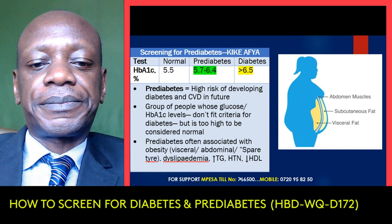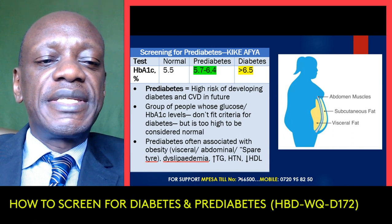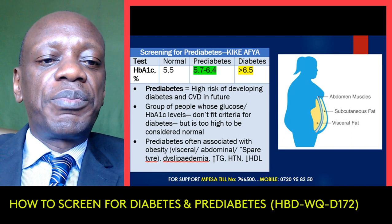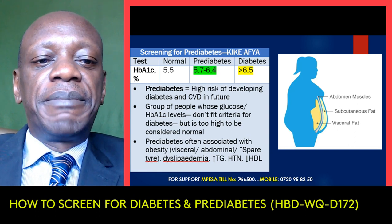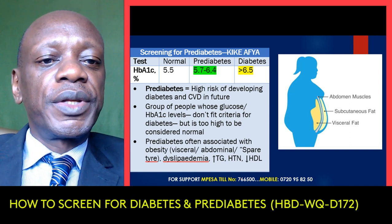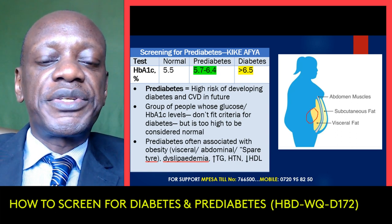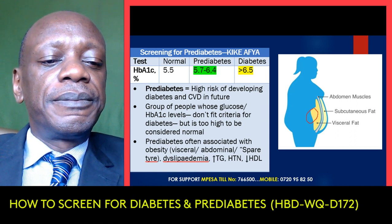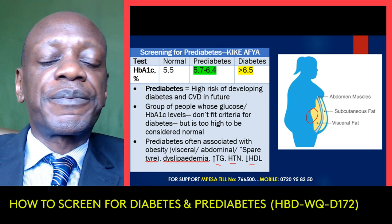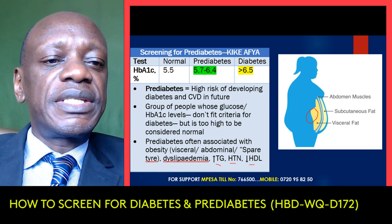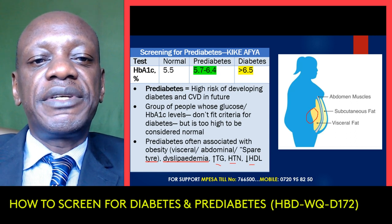Let me talk briefly about prediabetes. Prediabetes is when you have a high risk of developing diabetes and cardiovascular disease in the future. It describes a group of people whose glucose or HbA1c levels don't fit the criteria for diabetes, but are too high to be considered normal. Prediabetes is often associated with obesity — either visceral or abdominal — as well as dyslipidemia, excess triglycerides, high blood pressure, or low levels of good cholesterol, HDL. Using the A1c test, anything between 5.7 and 6.4 is considered prediabetes, above 6.5 is diabetic, and below 5.5 is considered normal.